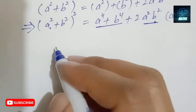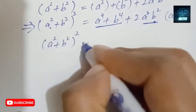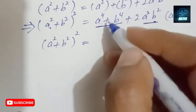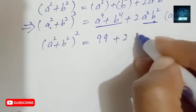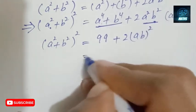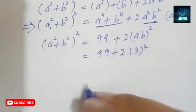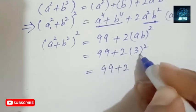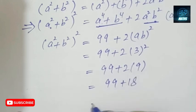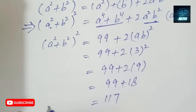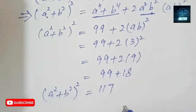Next, I write (a² plus b²)² equals a⁴ plus b⁴ plus 2(ab)². Putting in the values: a⁴ plus b⁴ equals 99, and 2(ab)² equals 2 times 3² equals 2 times 9 equals 18. So (a² plus b²)² equals 99 plus 18 equals 117.